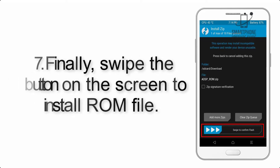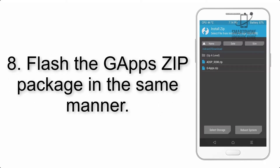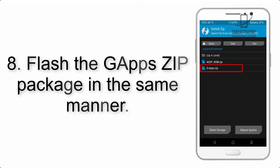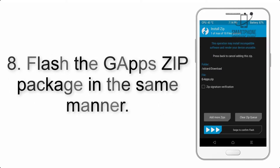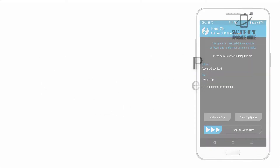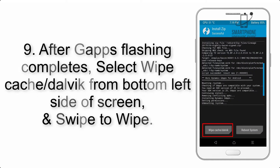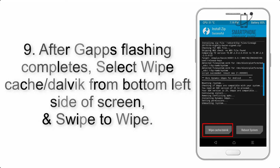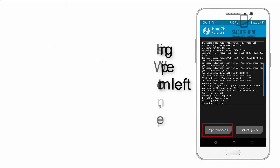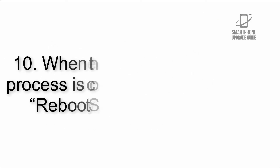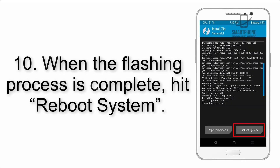Step 7: Swipe the button on the screen to install the ROM file. Step 8: Flash the GApps zip package in the same manner. Step 9: After GApps flashing completes, select Wipe Cache and Dalvik from the bottom left side of the screen and swipe to wipe.